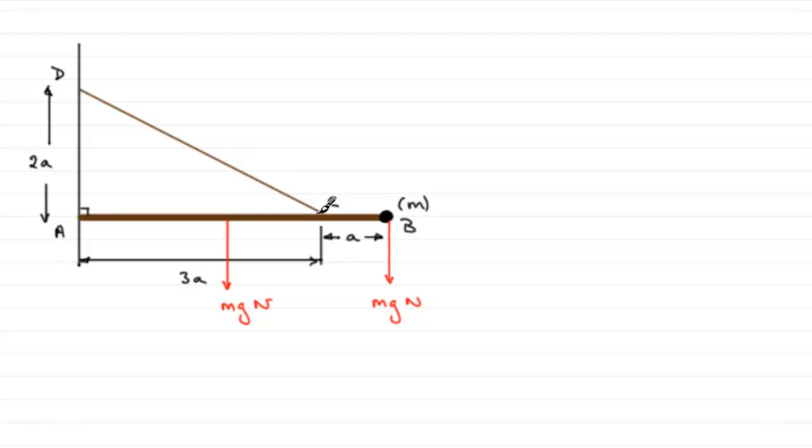There's also the tension in the string here, so that tension is going to be acting in this direction, call that T Newtons. There's going to be a contact force here at A from the hinge. We just put a value of R Newtons acting up in that direction. What we've got to do is show that if this rod is in equilibrium, the tension T is equal to mg root 13.